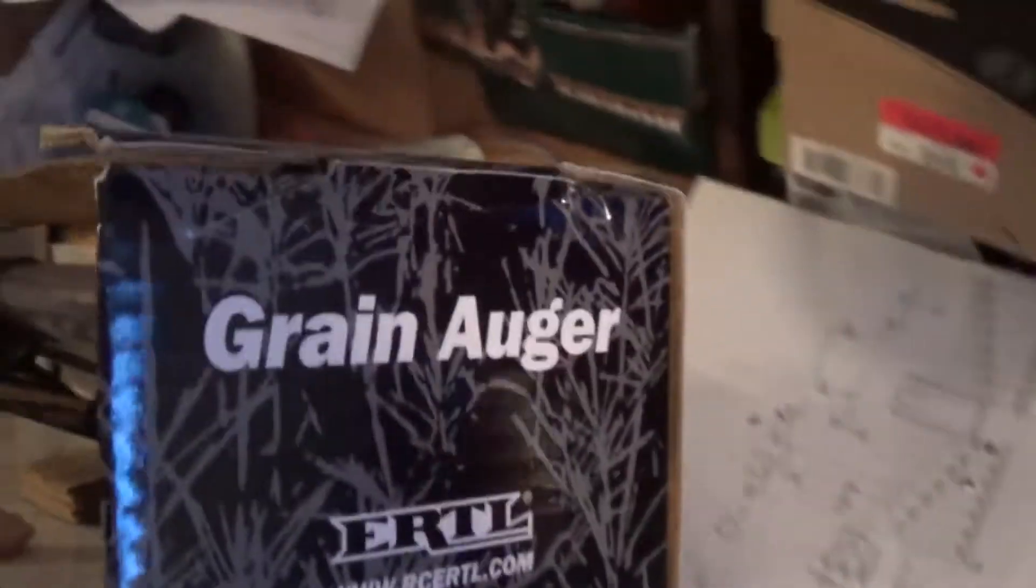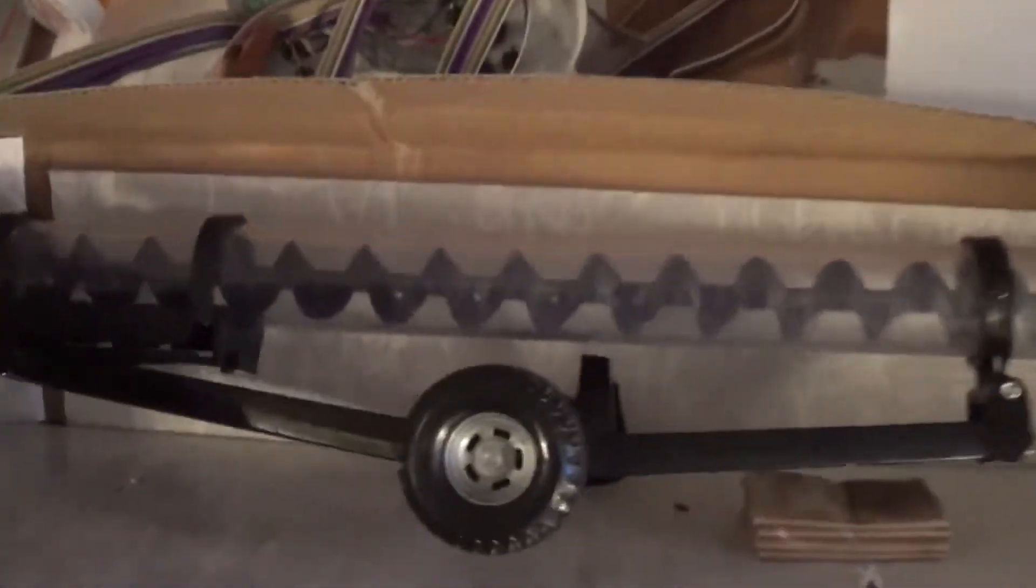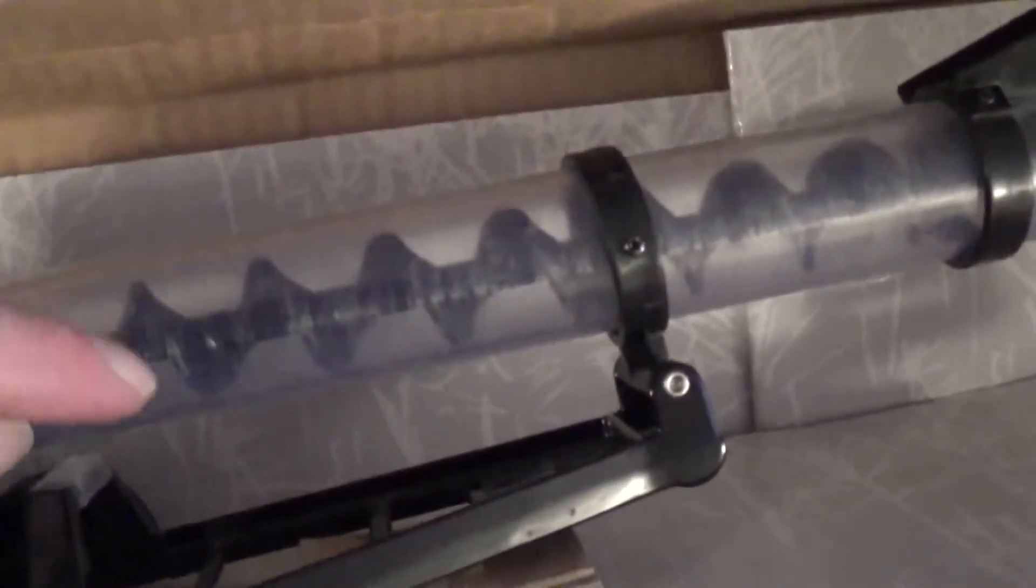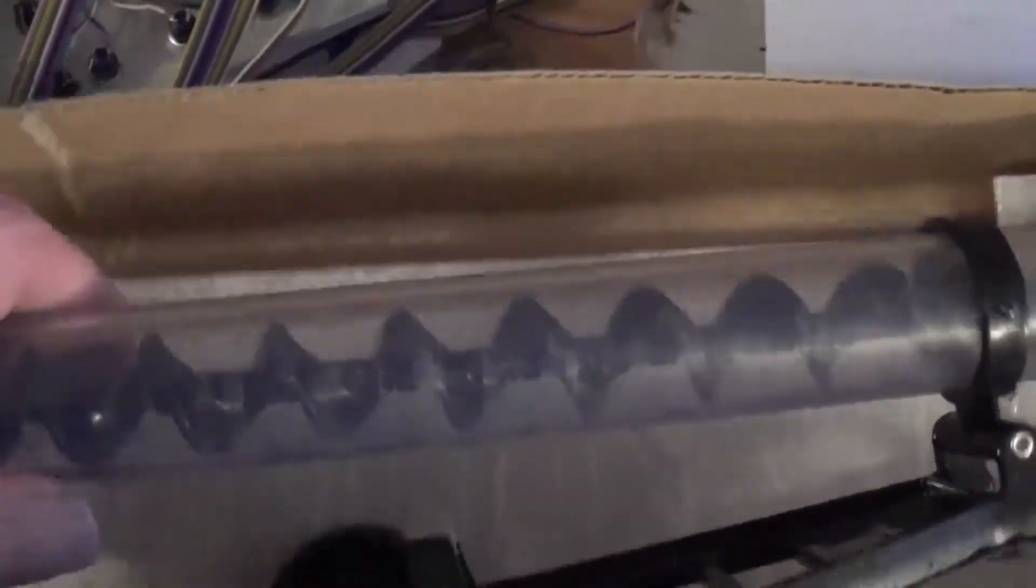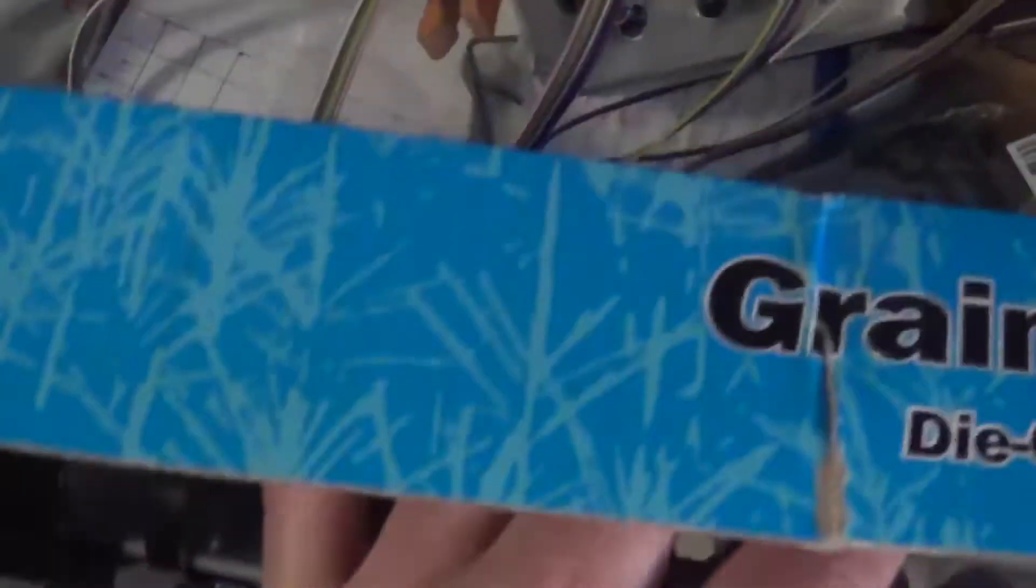And I also tried it on an Ertl grain auger, and all it does is grind the stuff up against the wall. The auger has about a quarter of an inch clearance in there, and all the stuff does is grind it when you look in here.